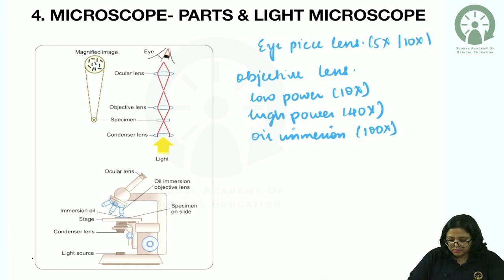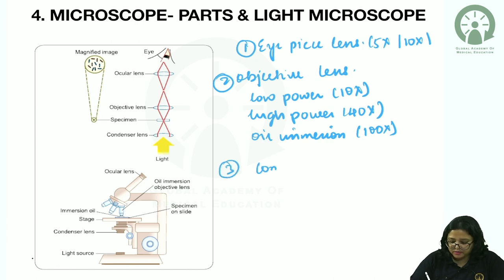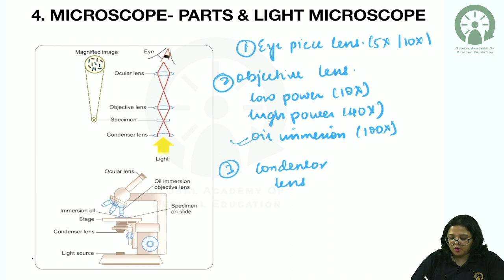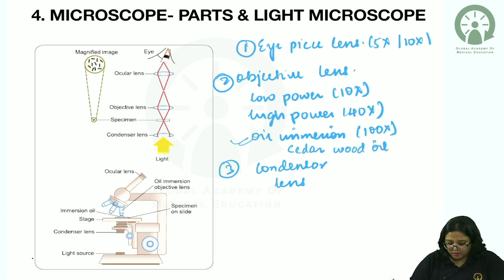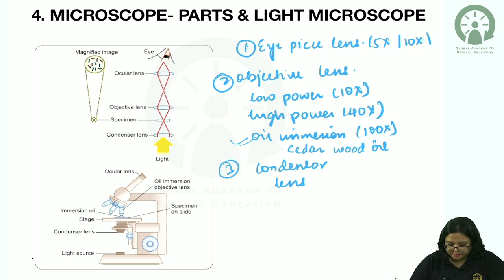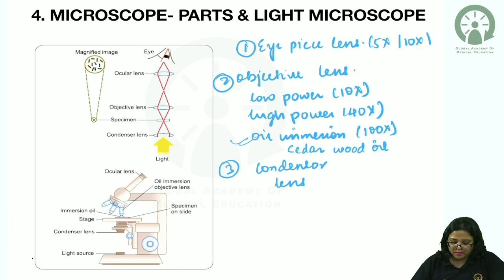The condenser lens is below the stage and is closed by the aperture. The specimen is placed on the stage. For oil immersion, oil (most commonly cedarwood oil) is added between the slide and the objective lens so that the refractive index of the slide, oil, and lens are the same. The source of light in light microscopy is from below, the objective lens magnifies, and the ocular lens adds further magnification.